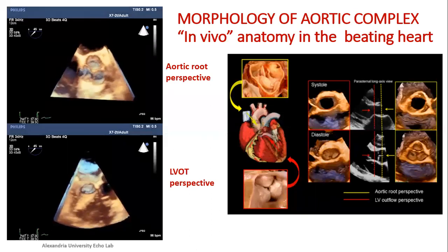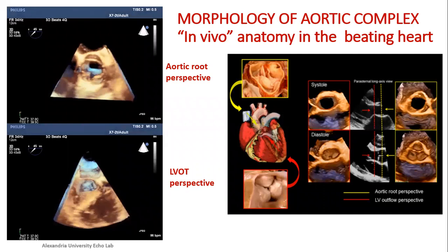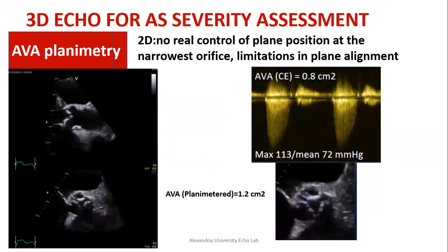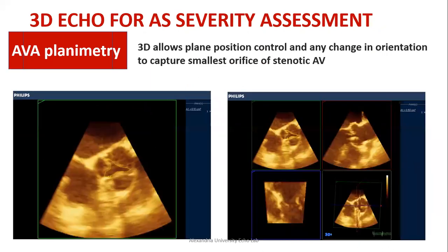With 3D echo, from one 3D volume we can obtain a nice en face view of the aortic valve from both the aortic root and LVOT perspectives, appreciating the valve opening and number of cusps. Using multiplanar reformatting software, we can place the cursor at the narrowest orifice of the stenotic valve and, in the bird's-eye view, trace the smallest orifice to get the correct aortic valve area — something not achievable with 2D echo due to lack of true plane alignment.